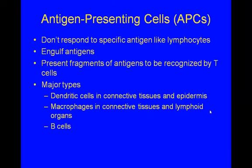APCs — antigen-presenting cells — don't respond to specific antigens like lymphocytes. They engulf non-self antigens and present fragments of those antigens to be recognized by T cells. Basically, they don't kill it — they engulf it and present a fragment at the surface so a T cell passing by can recognize it as bad and take care of it. This enables T cells to work much more efficiently.